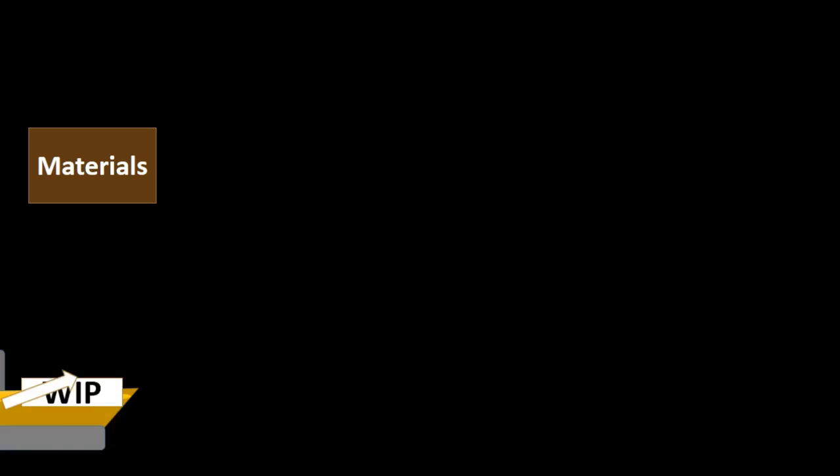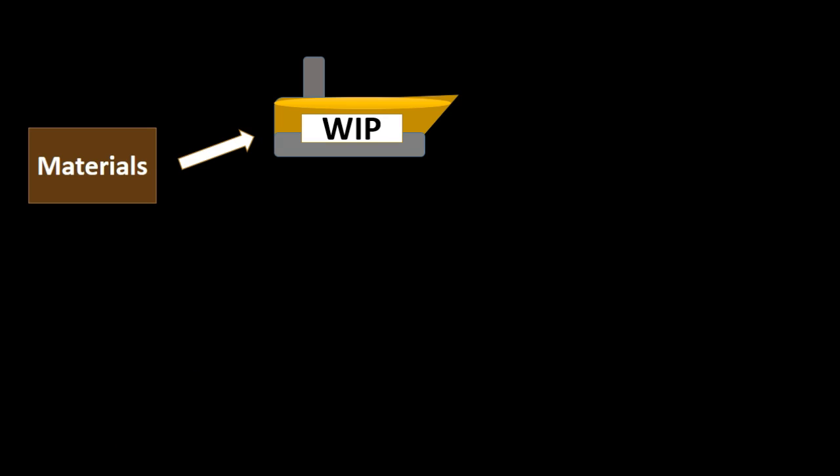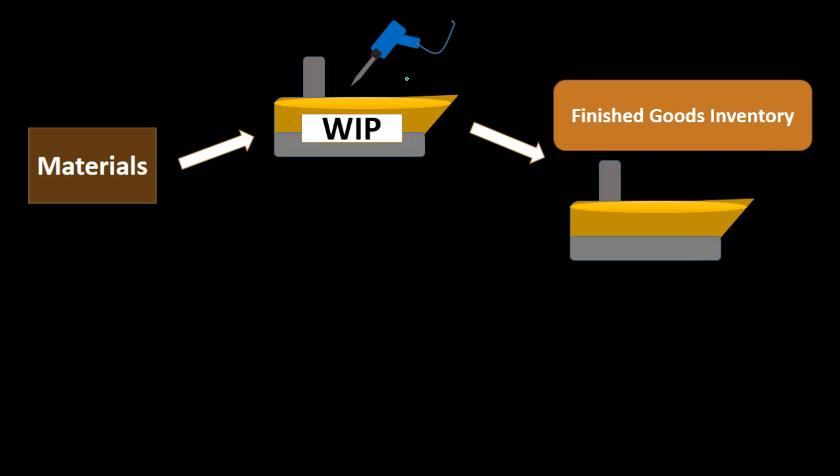Then we take those materials and put them into work in process. This means the boat is in the process of being created, but it's not yet a finished product, so we track it in a different account called work in process. Here we're working on the boat, the inventory that we will later sell. Obviously, if we're selling boats, we would have multiple boats we're tracking that are not yet completed. Once completed, we take it from work in process and put it into finished goods.